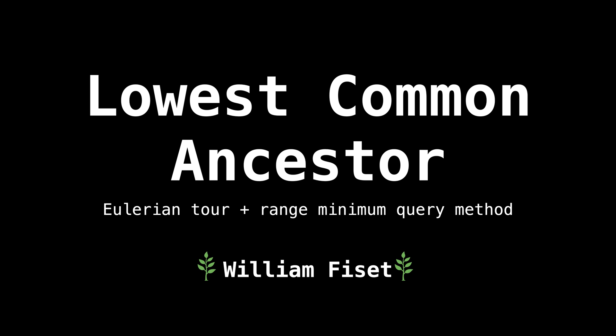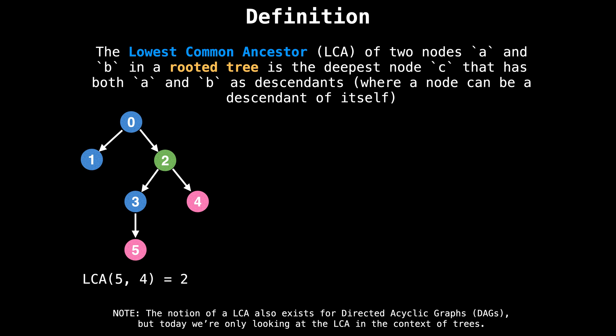Hello and welcome. My name is William. Today I want to take some time and talk about the lowest common ancestor problem. The lowest common ancestor problem, also abbreviated as LCA, is the problem of finding the deepest node C in a tree that has both node A and node B as descendants, where a node can be a descendant of itself. For example, in the tree on the left,